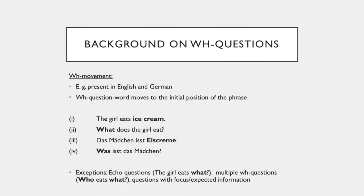WH movement happens, for example, in English and German. The WH question word always moves to the initial position of the phrase — as in 'the girl eats ice cream' becomes 'what does the girl eat?' Or in German, 'das Mädchen isst ice cream' becomes 'Was isst das Mädchen?' There are a few exceptions: echo questions like 'the girl eats what?', multiple WH questions like 'who eats what?', or questions with focus or information already expected to be given.